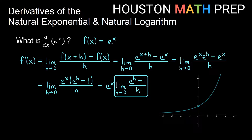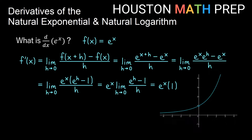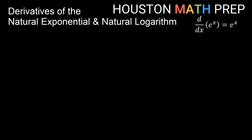We'll go ahead and do that by looking at a graph. So if I graph e to the h minus 1 over h, you can see that we get a hole in some exponential-looking graph, and the hole on the axis is actually at y equals 1. So this limit is 1, and so we get e to the x times 1, which of course is e to the x. So you can see that our derivative of e to the x is actually itself — e to the x. When we take the derivative of e to the x we get the exact same thing we started with. We'll go ahead and put that formula up in the corner.